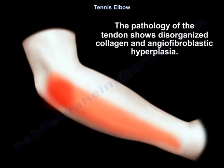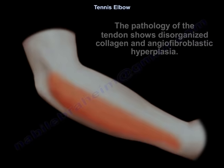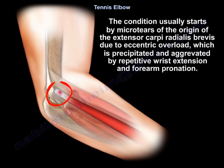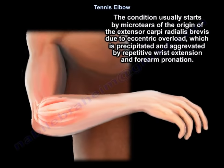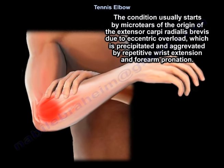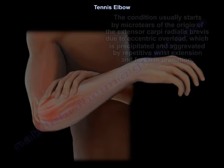The pathology of the tendon shows disorganized collagen and angiofibroblastic hyperplasia. The condition usually starts by microtears of the origin of the extensor carpi radialis brevis due to eccentric overload, which is precipitated and aggravated by repetitive wrist extension and forearm pronation.